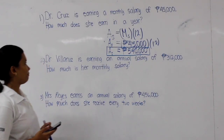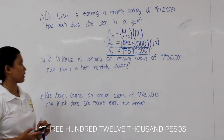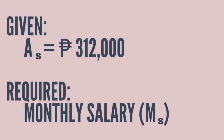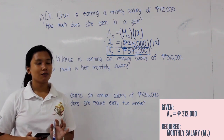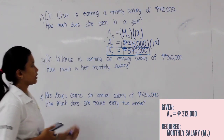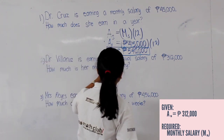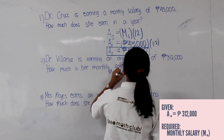For the second example, Dr. Bruce is earning an annual salary of 312,000 pesos. How much is her monthly salary? The given is annual salary (A sub S) equal to 312,000 pesos, and the required is monthly salary (M sub S). We are going to choose the formula: monthly salary is equal to annual salary over 12.